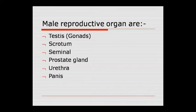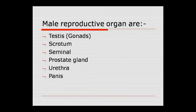अब male reproductive organs पढ़ना start करते हैं। अभी तक introductory class में कुछ terms पढ़ी थीं। Male reproductive organs में हैं: testes जिसको gonads कहते हैं, male gonads, scrotum, seminal vesicle, seminal gland, prostate gland, urethra और penis।